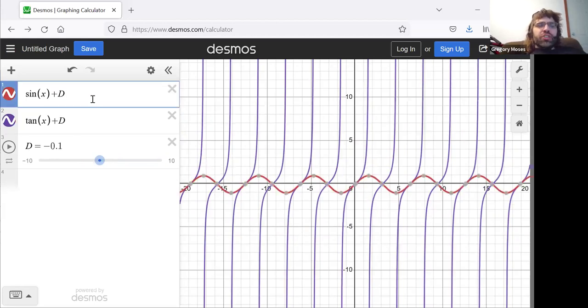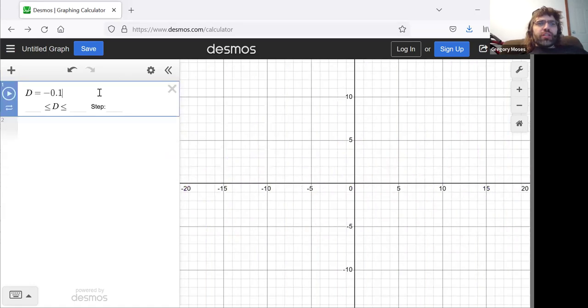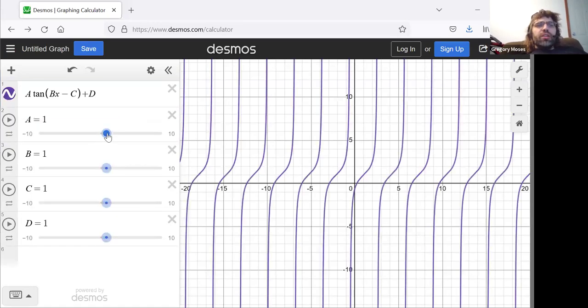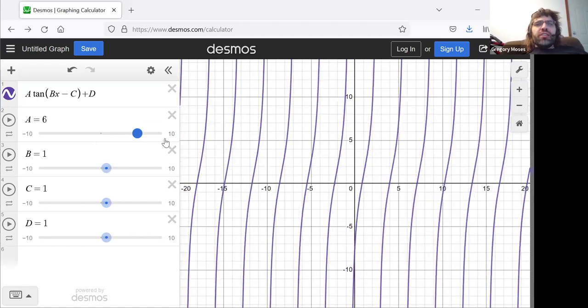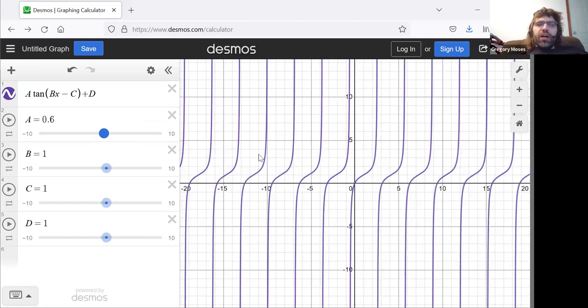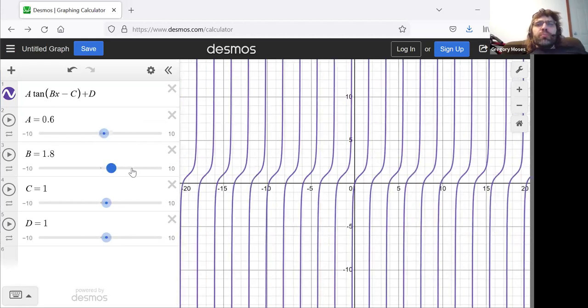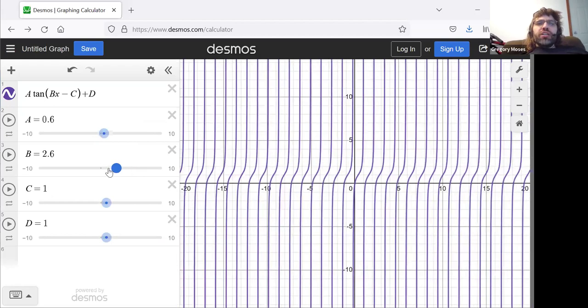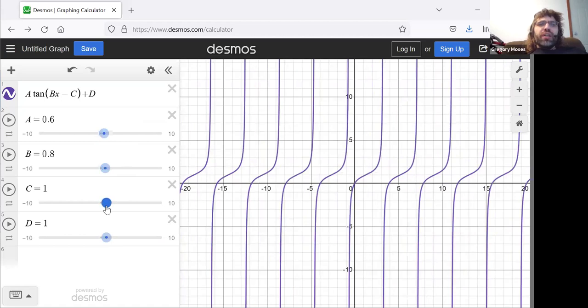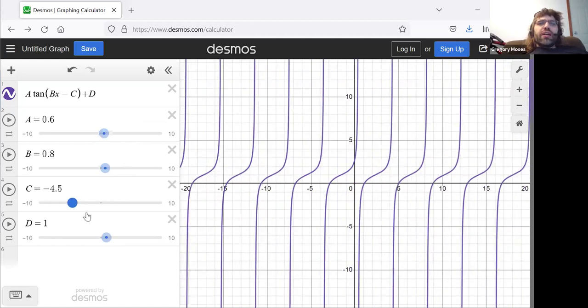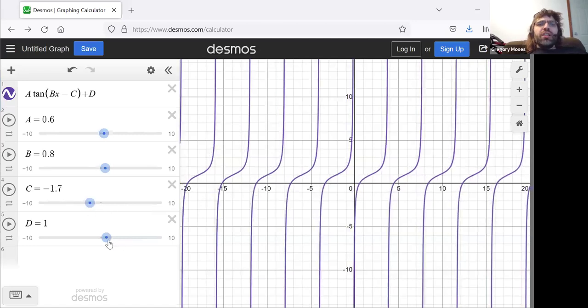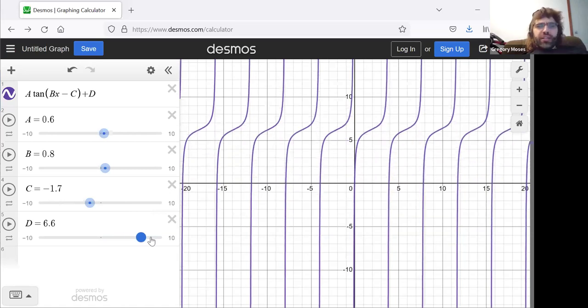So, the tangent equivalent of the sinusoidal function is a times the tangent of bx minus c plus d. All of these parameters act the same way they act with the sine. This a stretches or smushes the graph vertically. This b smushes or stretches the graph horizontally. This c moves the graph horizontally. This d moves the graph vertically.